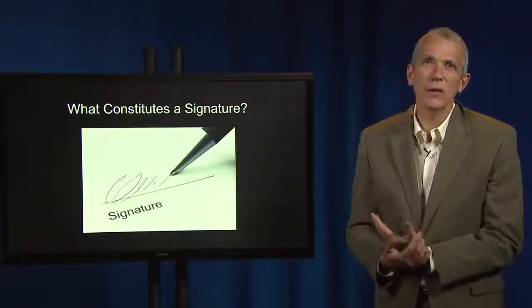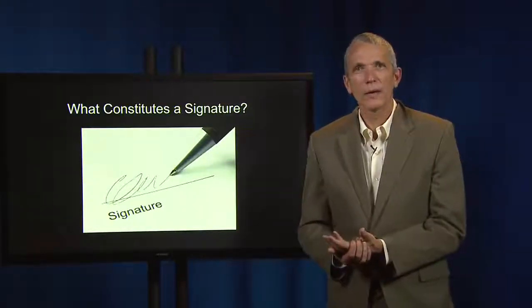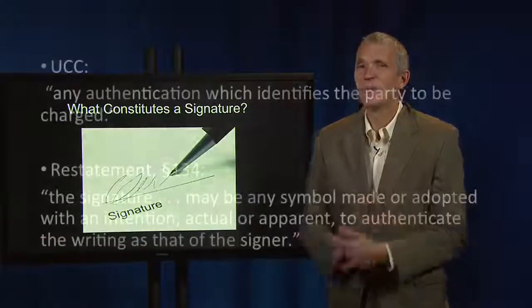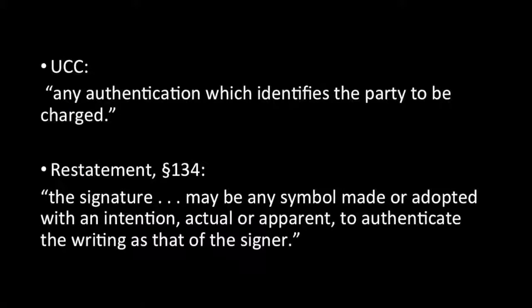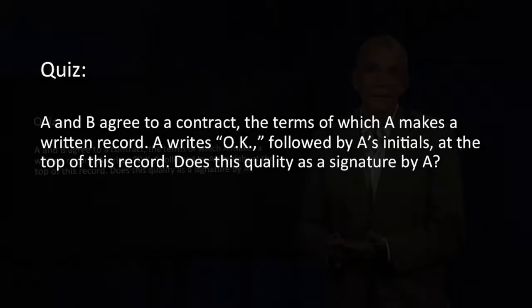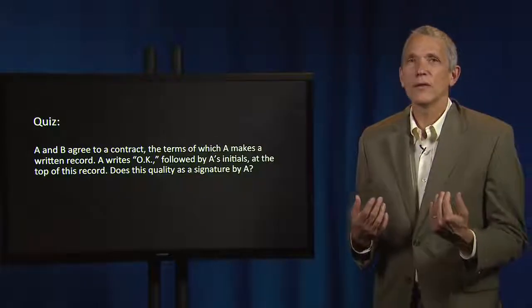The statute of frauds requires not only that contracts be in writing, but also that they be signed. Think for a moment of the kinds of contracts you have entered when you shop online — did you sign those agreements? The official comment to UCC 2-201 says that the word 'signed' includes any authentication which identifies the party to be charged. Generally, courts take a broad view of what constitutes a signature. The Restatement Second of Contracts Section 134 says that the signature may be any symbol adopted with an intention, actual or apparent, to authenticate the writing as that of the signer. So if A and B agree to a contract, the terms of which A makes a written record, and A writes 'OK' followed by A's initial at the top of this record — does this qualify as a signature by A? The answer is yes.